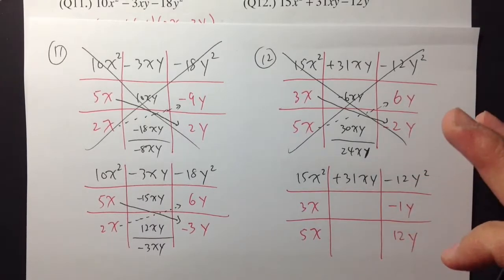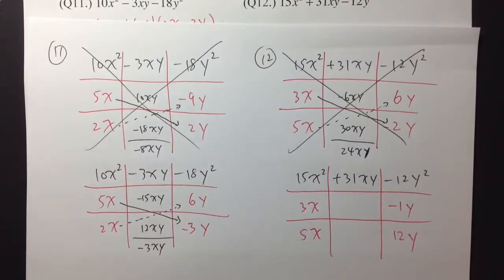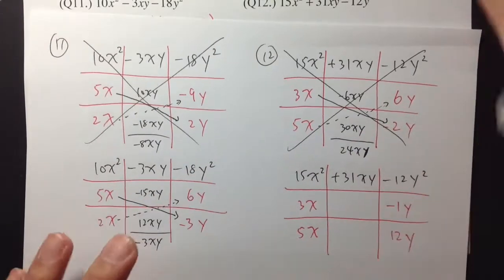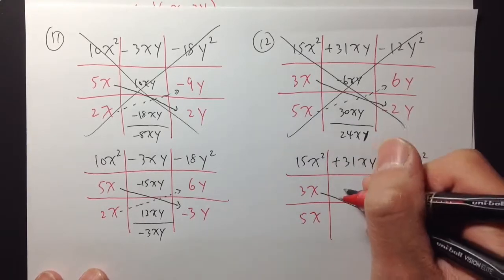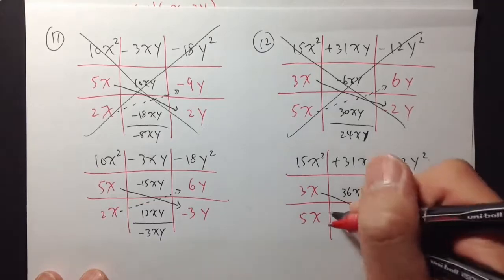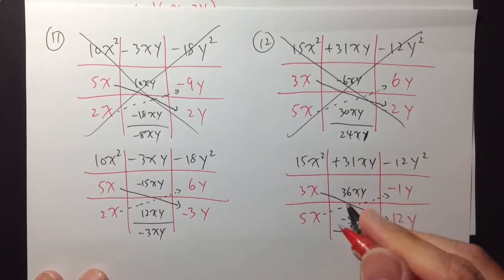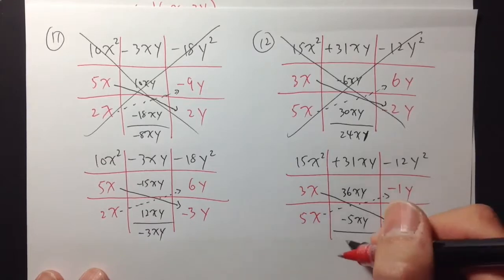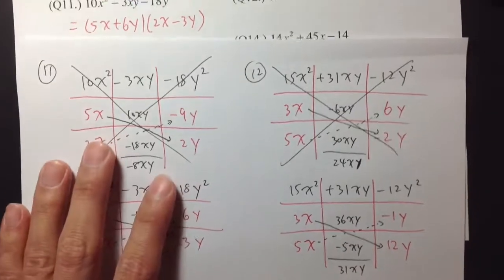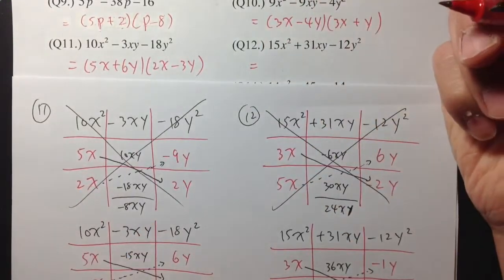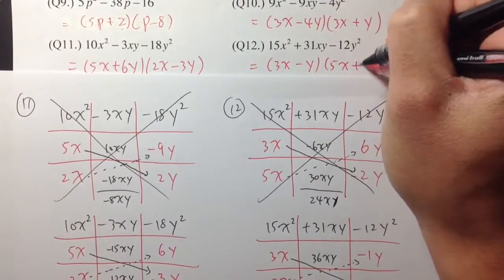Okay. So 3x times 12y — that's 36xy. And then 5x times negative 1y is negative 5xy. As we can see, we have 36xy minus 5xy, and that's exactly 31xy. So we got it: (3x − y)(5x + 12y). This is equal to 3x minus y times 5x plus 12y.